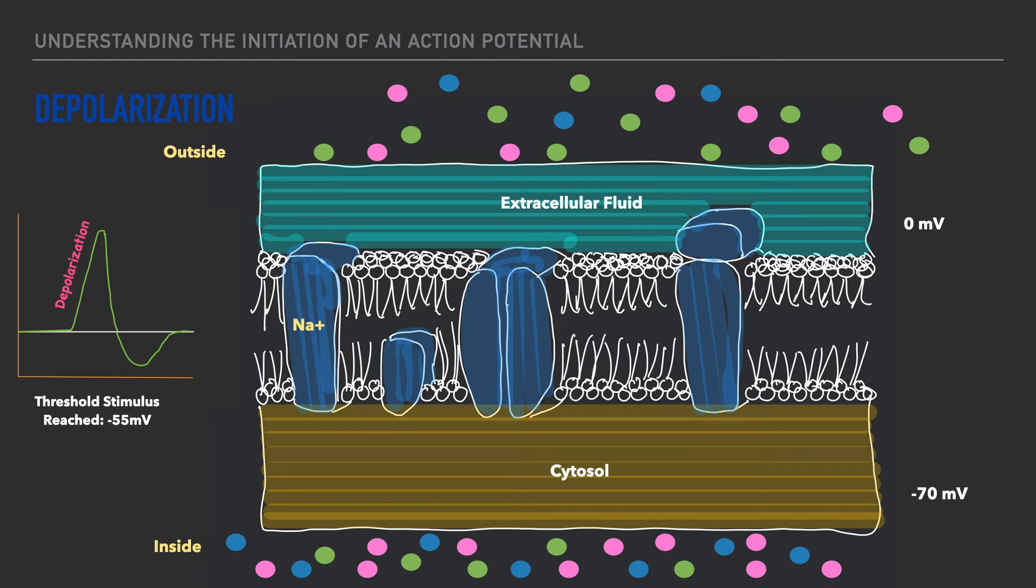And once this threshold stimulus is reached, we have the opening of sodium-gated channels. And the sodium-gated channels shown here allow sodium from the outside of the cell to rush into the cell very quickly. And as this sodium enters the cell, it makes it more positive. And again, we call this depolarization, and the charge on the inside of the cell begins to approach zero millivolts.